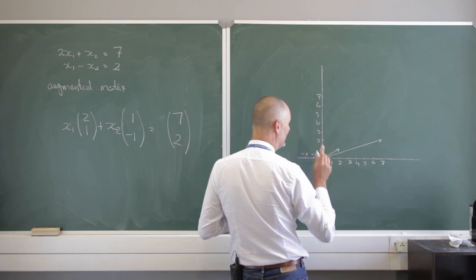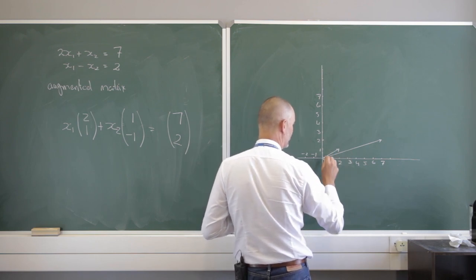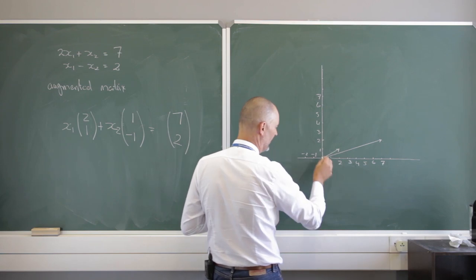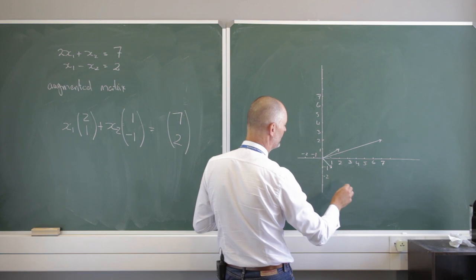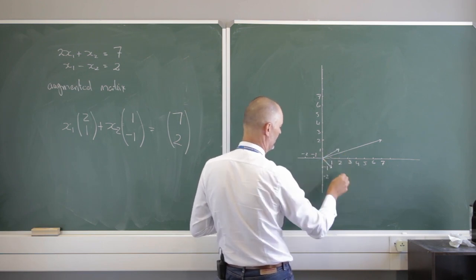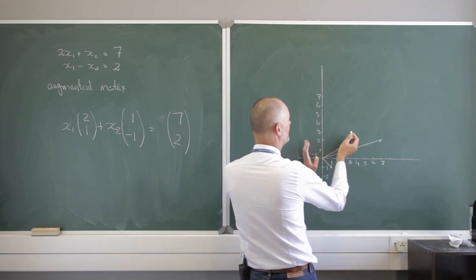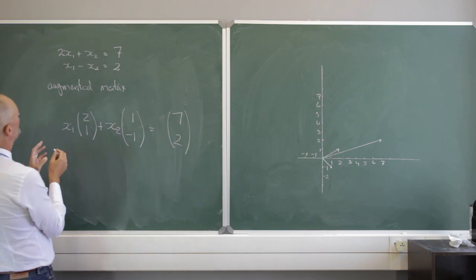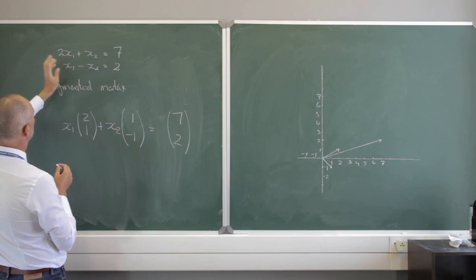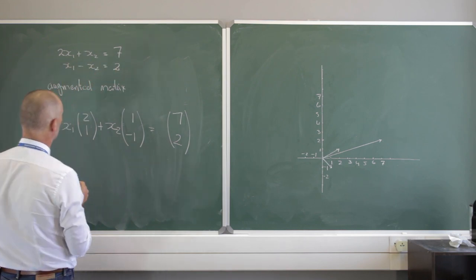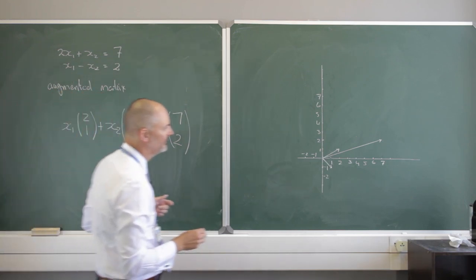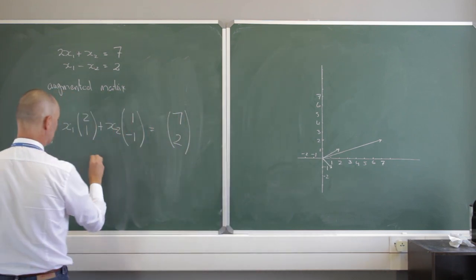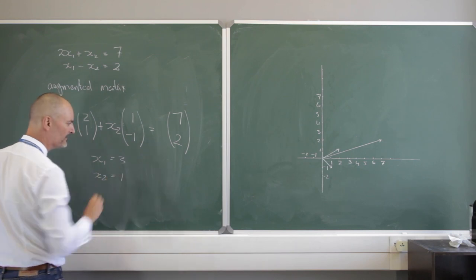Can I get there by a linear combination of these two vectors? A linear combination means I scale this vector along its line and scale the other vector along its line, so that when I add the two scaled versions I reach the target vector. These coefficients — vectors 2,1 and 1,negative 1 — live in this two-dimensional space, and when we see that x1 equals 3 and x2 equals 1, we can verify this geometrically.